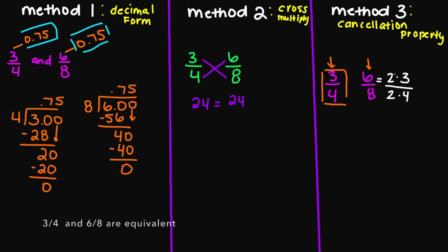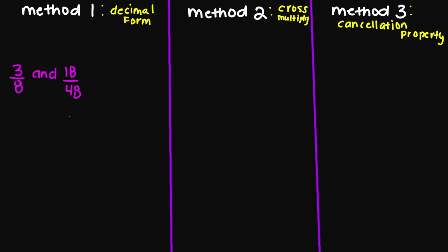And by looking at this example, you're going to see that your twos are going to cancel out. And then you're going to be left with three over four, which is the same as what we have here on this side. Another way you can solve this for method three is: I know that two goes into both the six and the eight. So my numerator, I know I'm going to get three. And my denominator, I know I'm going to get four.